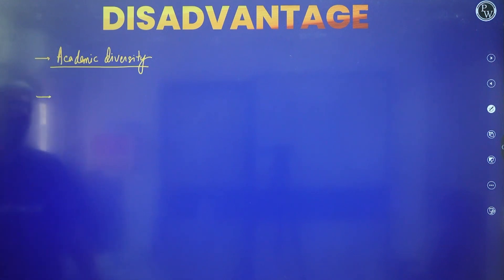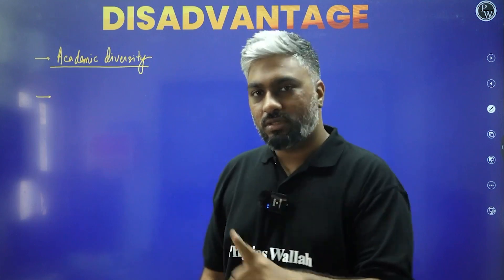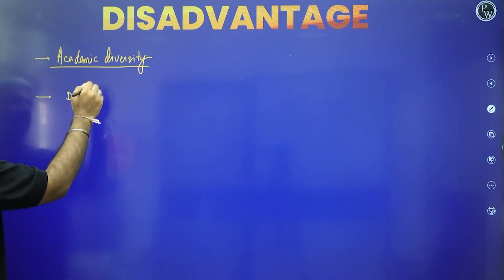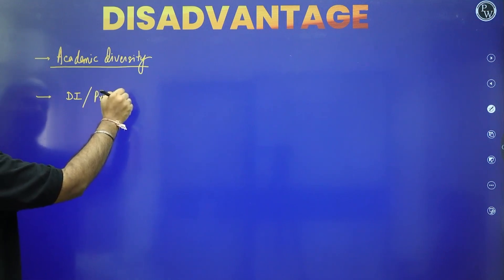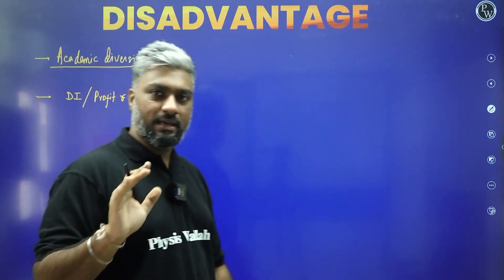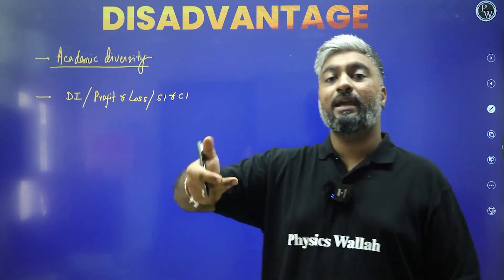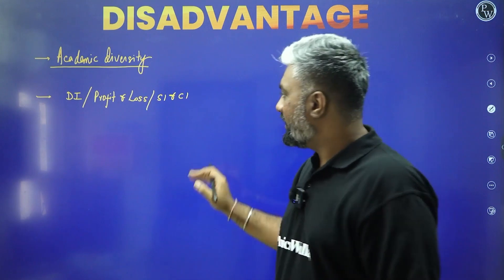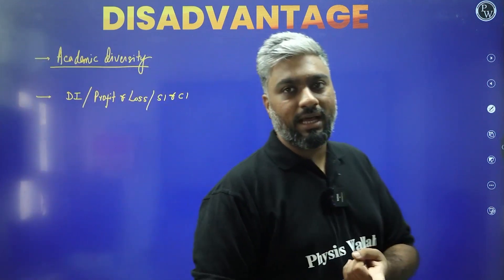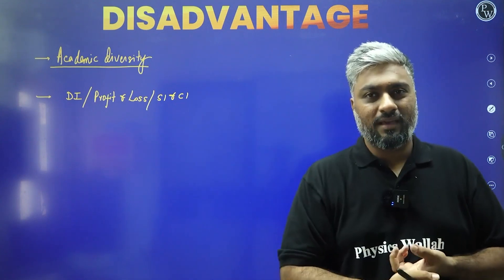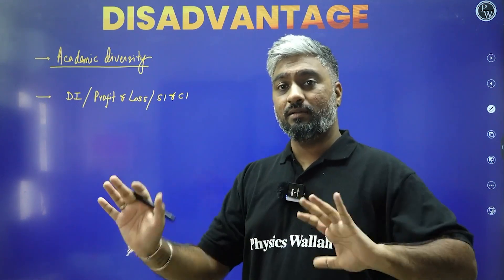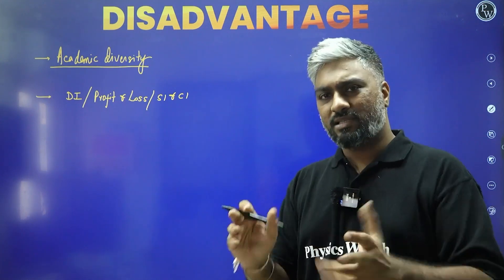Disadvantage number two for science students: understanding DI could be a little bit of trouble. There might be slight difficulty understanding topics like profit and loss or SI-CI. Now unko math wala part samajh mein aajata hai, but the logic behind it — why something is happening, what is happening — usme thoda sa dikkat ho sakta hai. So this could be one of the places where a commerce student might have an advantage, because they would have done accounts and economics. But again, that does not mean one always has an advantage over the other — yeh ek generalized statement hai.